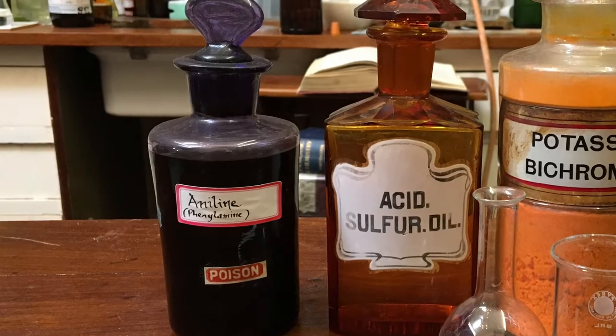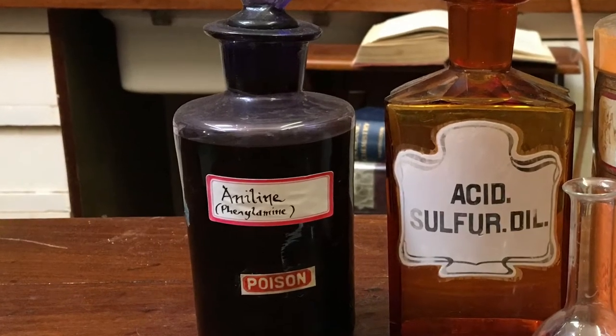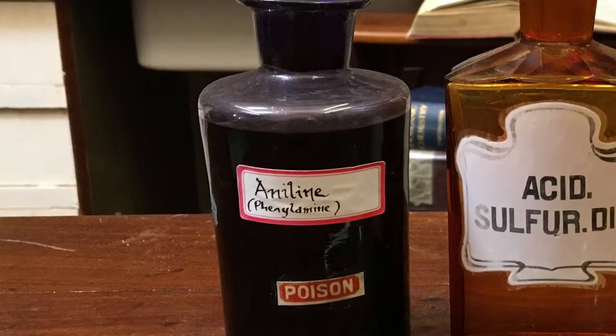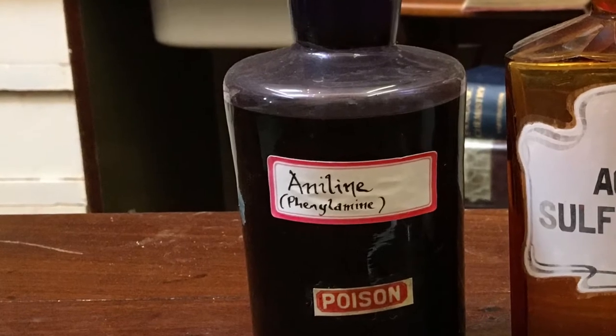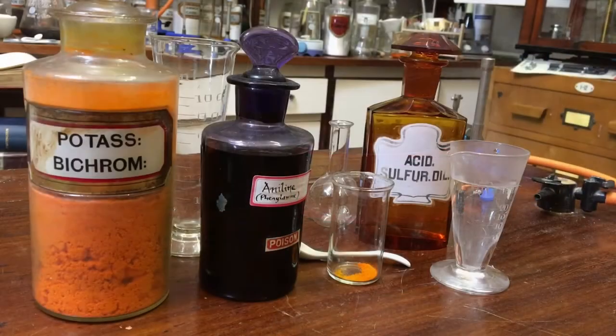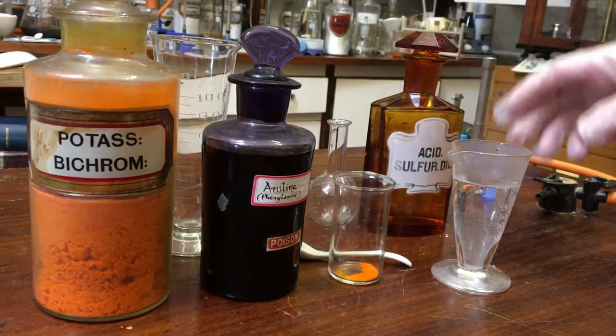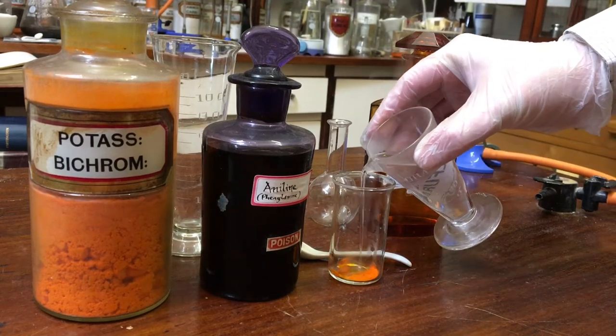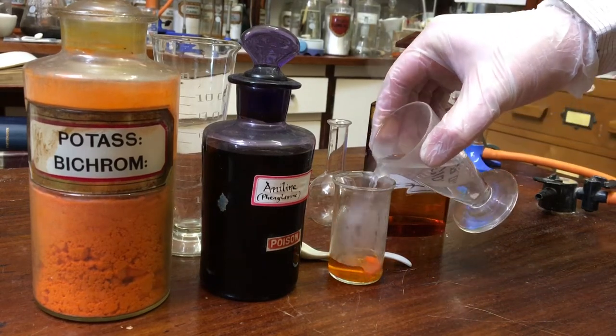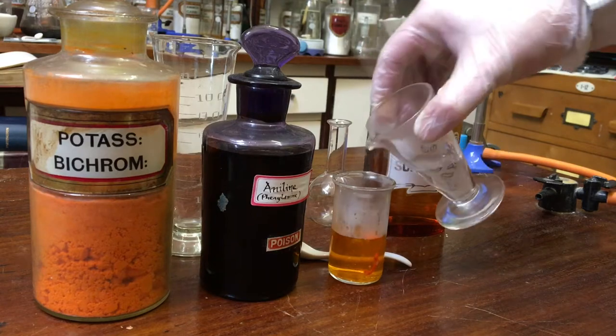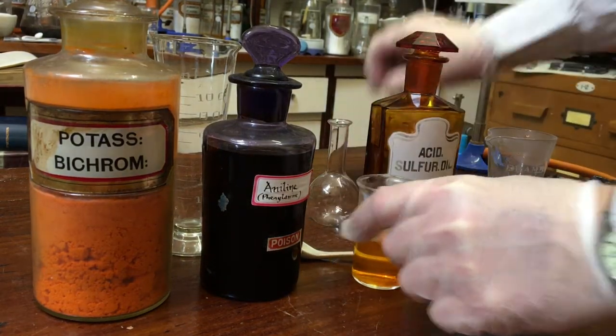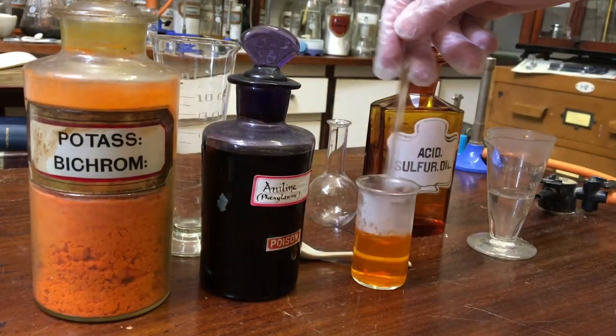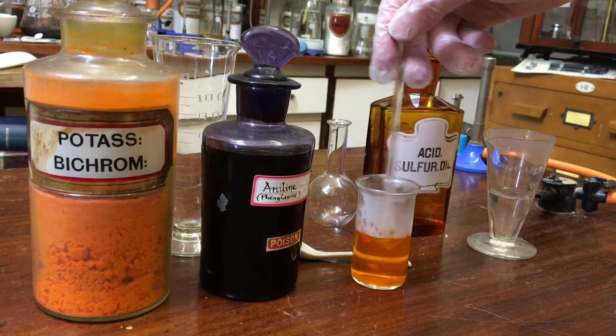Welcome to my laboratory again. I thought it would be nice to commemorate the 162nd anniversary of the discovery of the very first synthetic organic dye known as mauve. It was originally made from aniline and oxidizing it with some potassium dichromate in sulfuric acid, and that's what I'm going to do today.